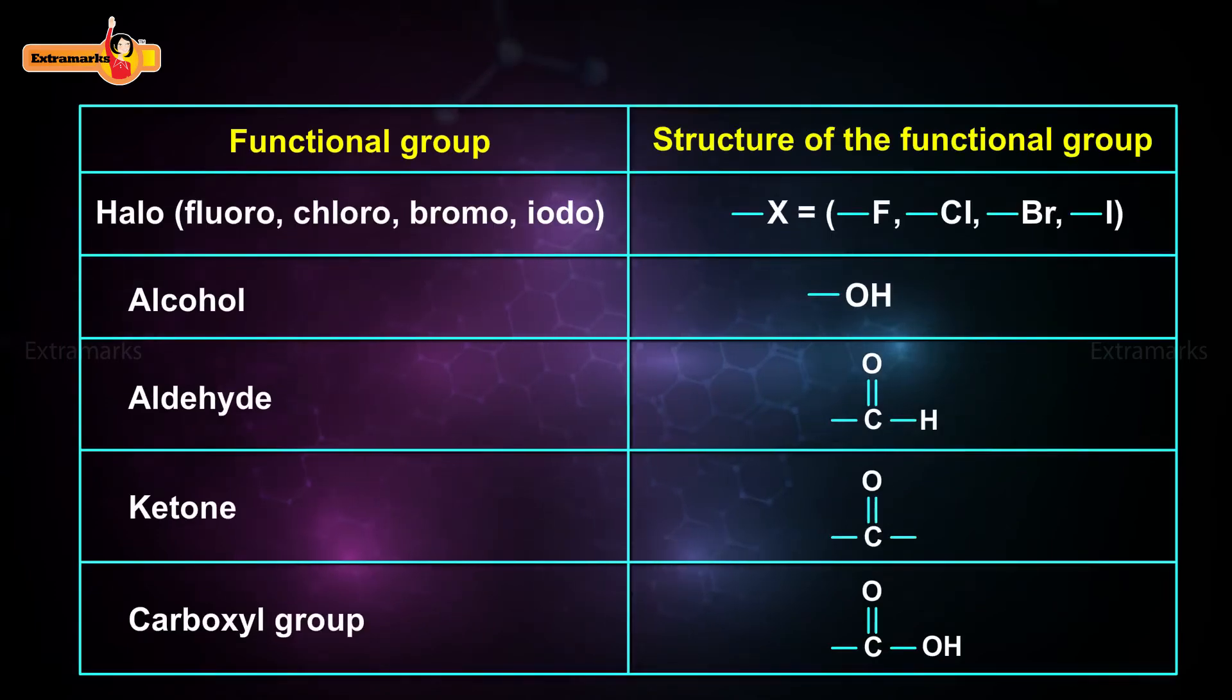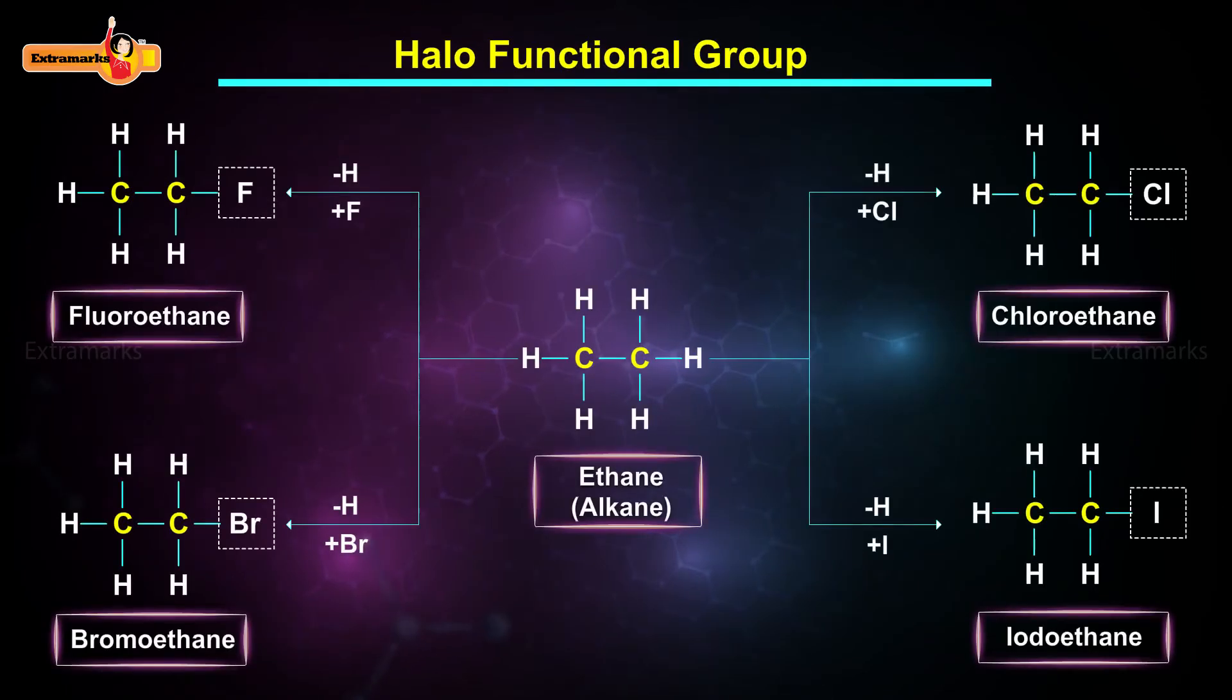Many functional groups are present in organic compounds. The dashed line in these functional groups represents the free valency which gets attached to the carbon atom. Let us take an alkane, say ethane and replace or substitute a hydrogen atom with a halogen which can be fluorine, chlorine, bromine or iodine.